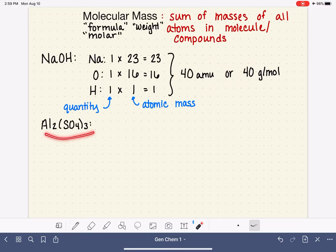Let's try again with just one more example. So first we want to identify all the different types of atoms. We have aluminum, we have sulfur, and we have oxygen. We also want to identify the quantity of each. So from this subscript, we know that we have two aluminums.